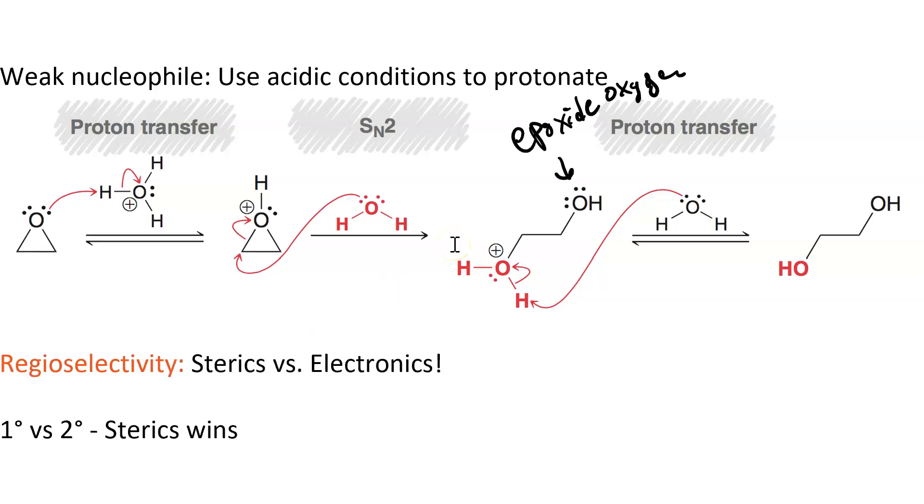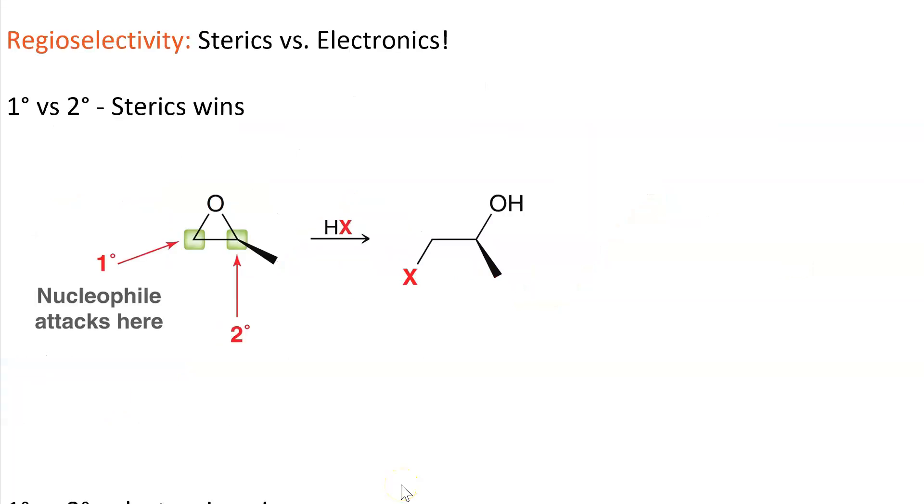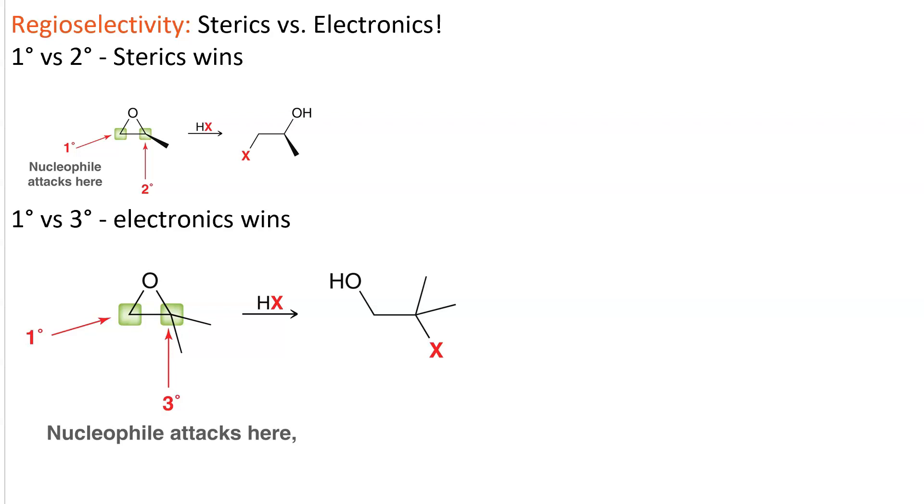Again, in acidic conditions, the regioselectivity is a question of sterics versus electronics, and it depends on your two ring carbons in the epoxide. If it's a question of primary versus secondary, the nucleophile is going to attack in the primary position. On the other hand, if it's primary versus tertiary, or secondary versus tertiary for that matter, electronics wins, and the nucleophile attacks in the tertiary position.